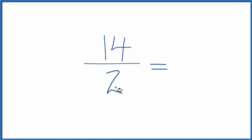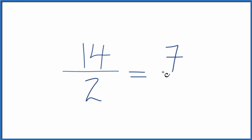So since both of these are even, I'm going to divide the numerator and the denominator by 2. 14 divided by 2, that's just 7. And then 2 divided by 2, that's 1.